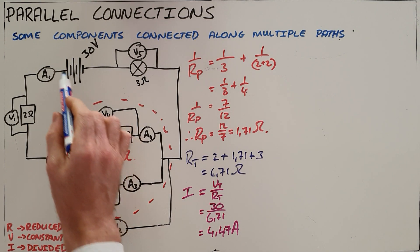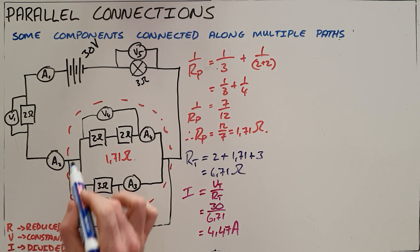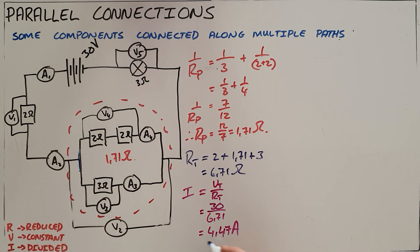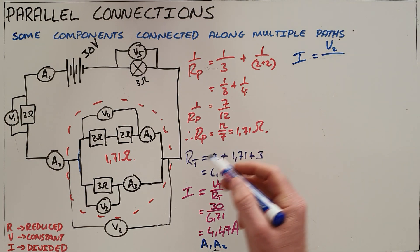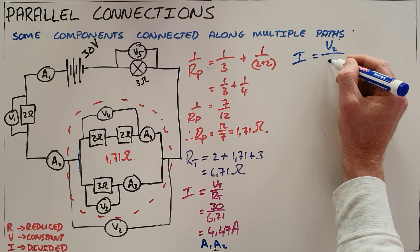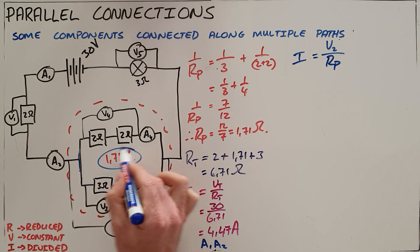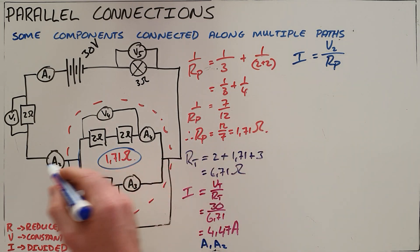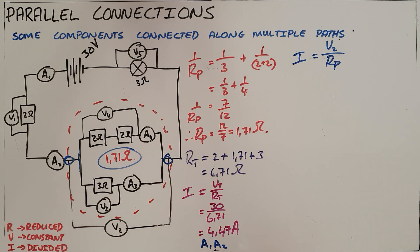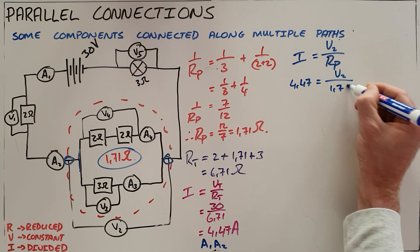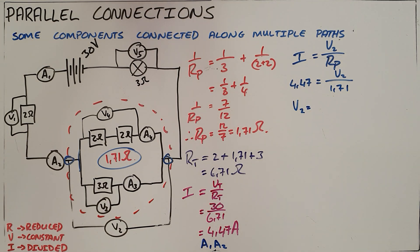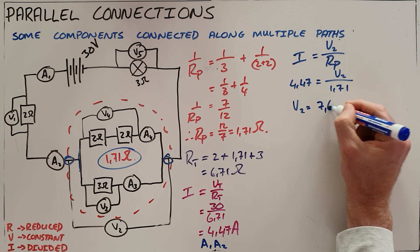That gives us a total current of 4.47 Amps, which is the total series current. We know current is divided in a parallel circuit, so it will split, but this is the reading on ammeter A1 and A2 since they are in series. We can then use Ohm's law to find the voltage measured by V2. The resistance is the equivalent parallel resistance, and the current at that point is 4.47 Amps, so V2 equals 7.64 volts.